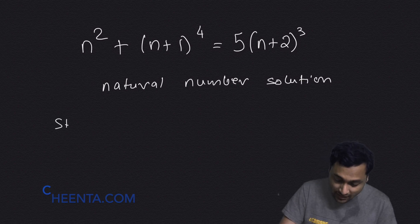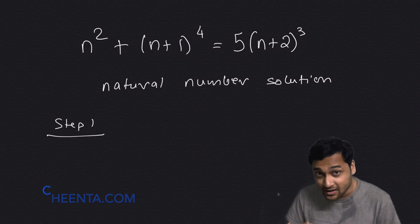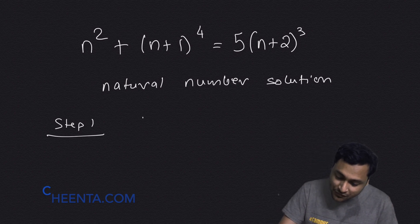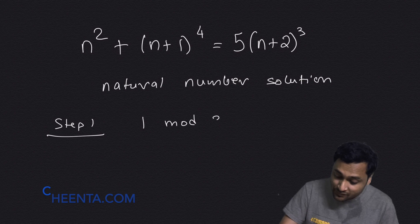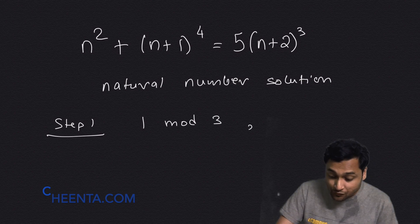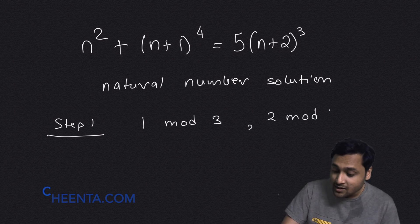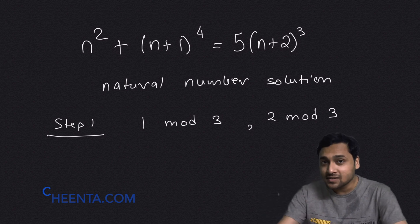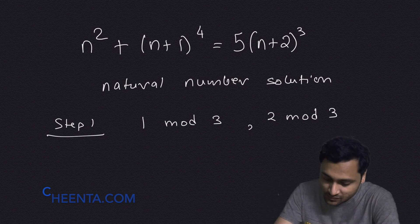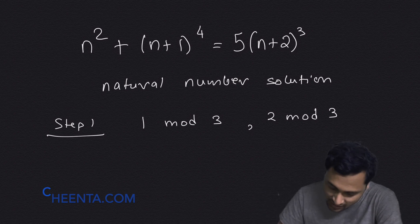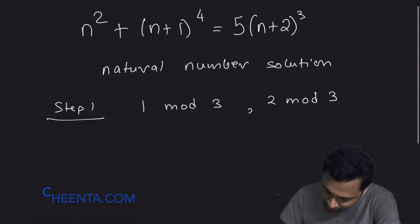Step 1 — and you can pause the video here and give it a try — show that numbers of the form 1 mod 3 and numbers of the form 2 mod 3 cannot be solutions to this equation. It's actually very easy. Let me show you how.